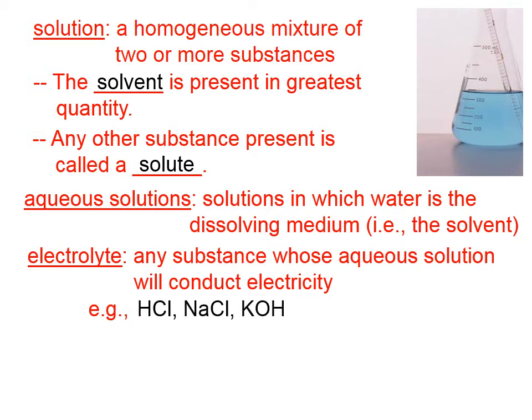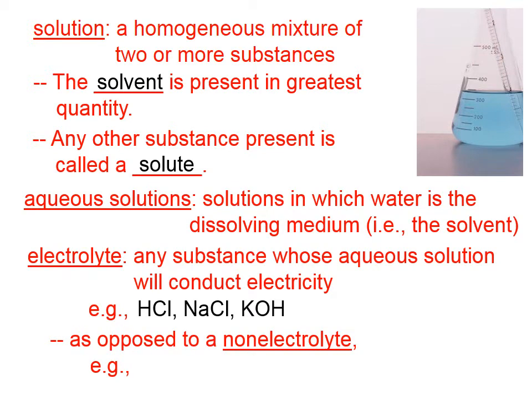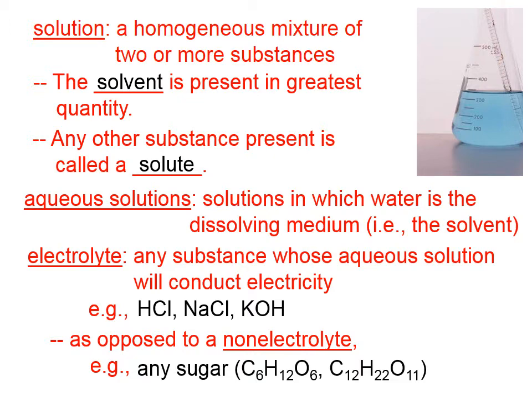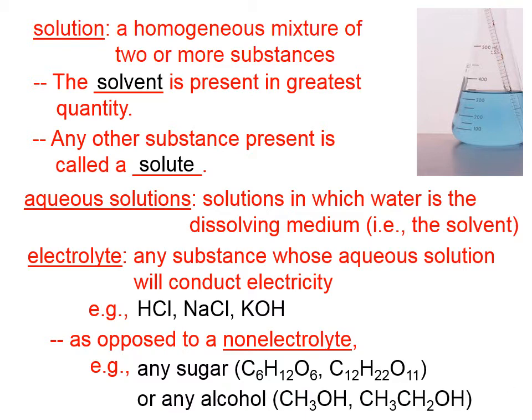Here are a couple of examples of electrolytes. The reason that something conducts is because it forms ions in aqueous solution. As opposed to a non-electrolyte — any sugar or any alcohol. Here are a couple of chemical formulas that represent sugars and alcohols. I ask my students to know that any sugar or any alcohol is a non-electrolyte.